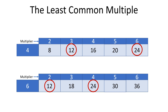So, twelve and twenty-four are common multiples for four and six. Least common multiple means we use the smallest number that is a common multiple as the common denominator. Twelve is smaller than twenty-four, so twelve is the least common multiple for four and six, and we will use it as a common denominator.